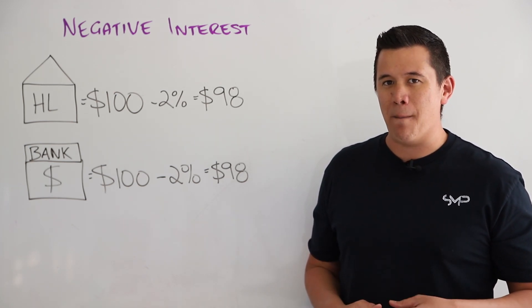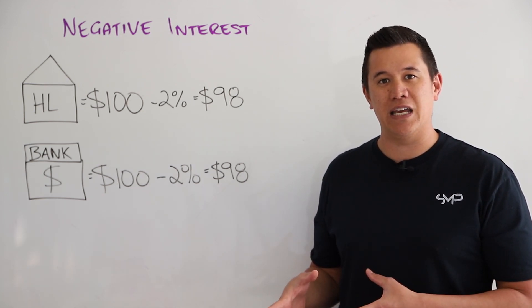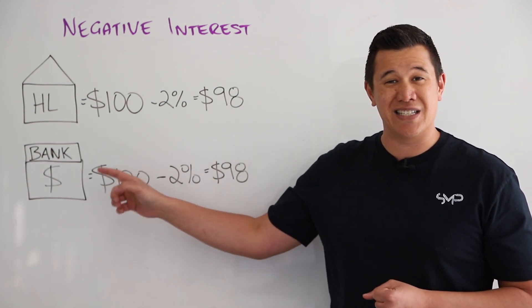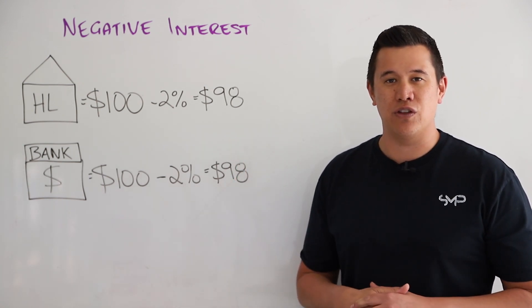Conversely however, the banks still need to try and make up that loss somewhere and they're going to charge us for the benefit of saving money in the bank. So if we had $100 in a savings account with the same negative 2% interest rate, they'll take $2 over the course of the year.